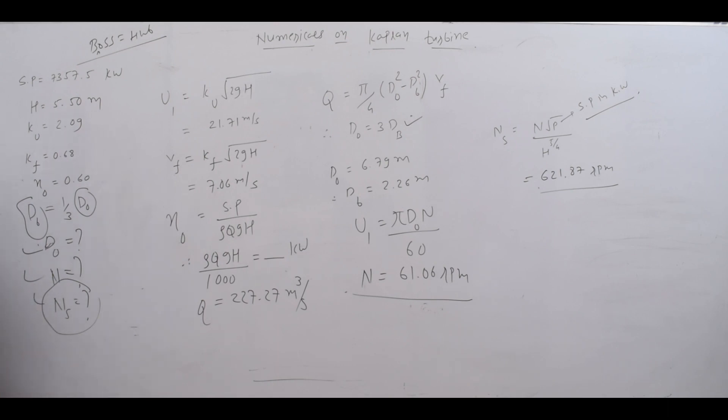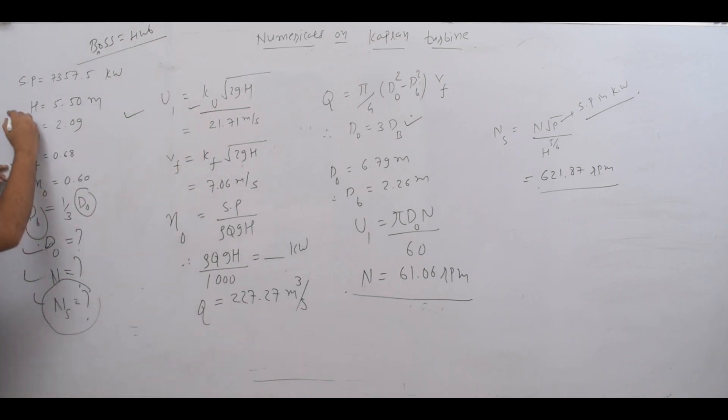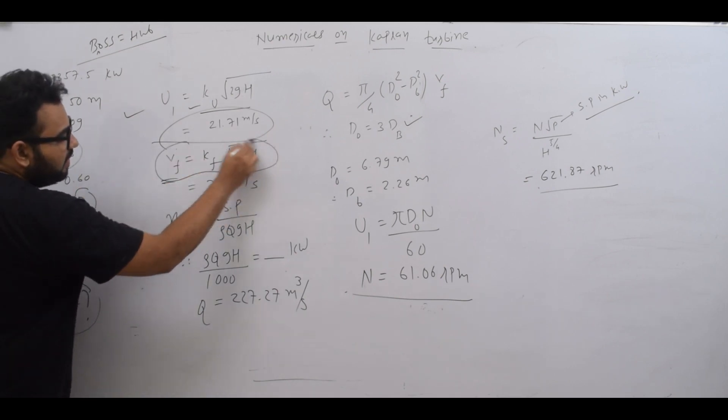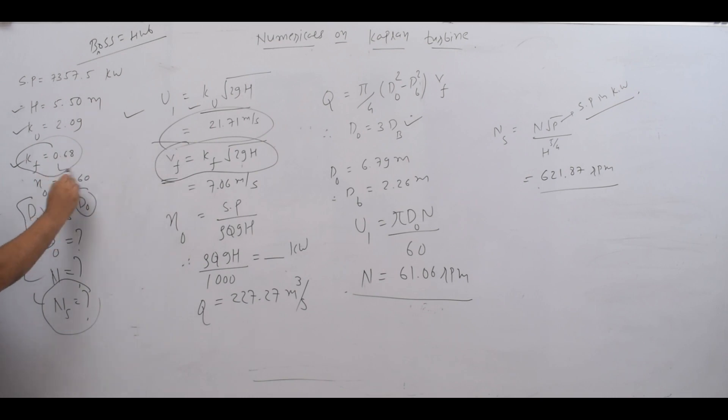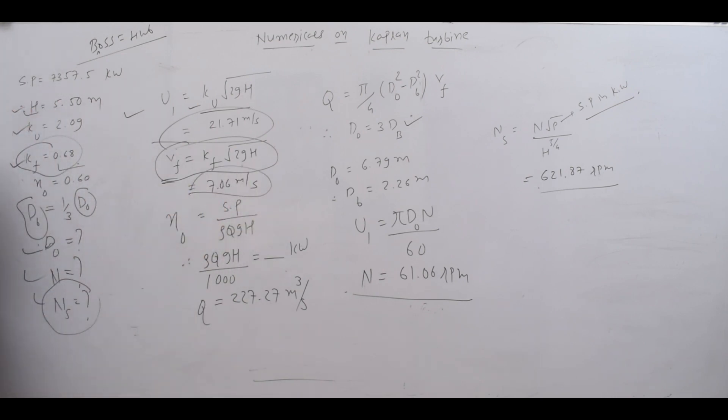First, when we have speed ratio and flow ratio, we get U1 equals Ku times square root of 2gH. From the speed ratio, U1 is 21.71 meters per second. From the flow ratio, Vf equals Kf times square root of 2gH, so flow velocity is 7.06 meters per second.